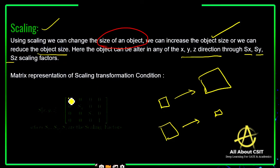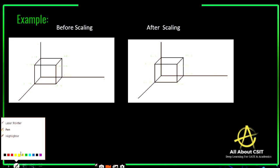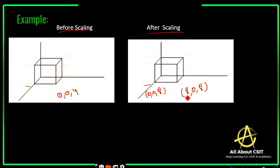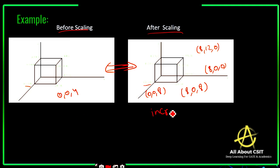In this diagram, this is the original object before scaling. After scaling, the coordinates change: for example, coordinates that were 0,0,0 and 4 become 0,0,0 and 8; coordinates at 4,0,0 become 8,0,0; and coordinates at 4,0,4 become 8,0,8. This implies that the original object has increased its size — the object size is increased after scaling.